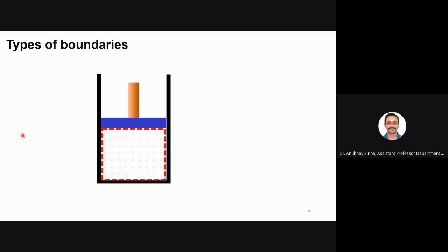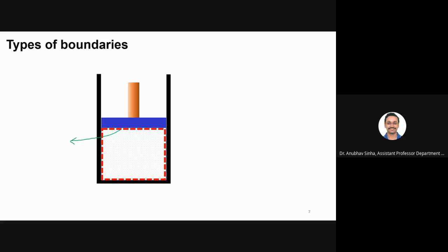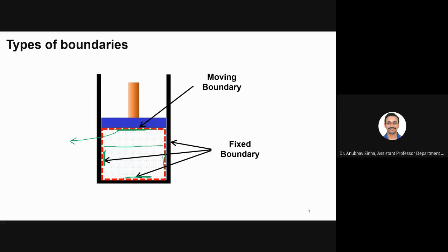Let us talk about types of boundaries. Consider the piston cylinder arrangement — it is actually a 3D object. The cylinder walls are fixed boundaries — they are not moving. The piston is also a wall, but it is moving. If the piston comes down, that boundary will move accordingly. So there is a difference: this boundary is called a moving boundary, while the cylinder walls are fixed boundaries.